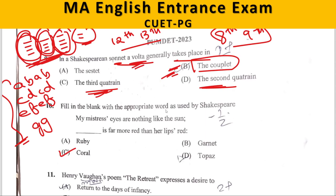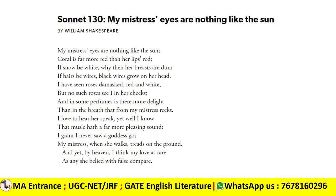Fill in the blank with the appropriate word as used by Shakespeare. The correct answer is 'coral.' This is a couplet from Shakespeare's Sonnet 130: 'My mistress's eyes are nothing like the sun; coral is far more red than her lips' red.' This is Sonnet 130.